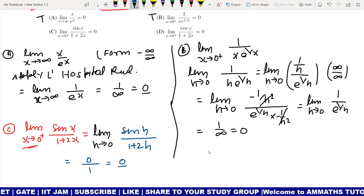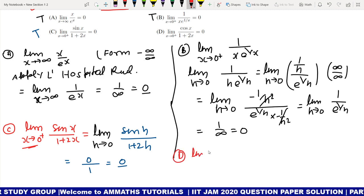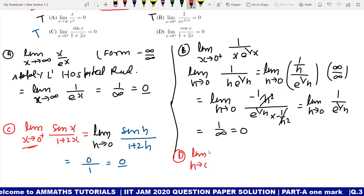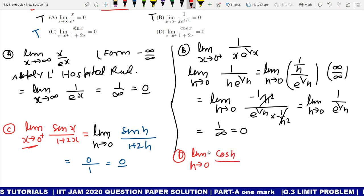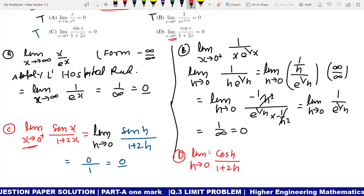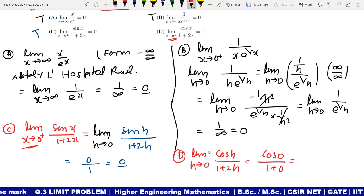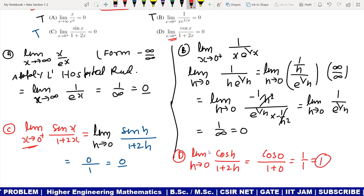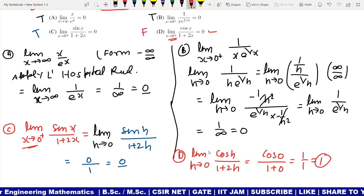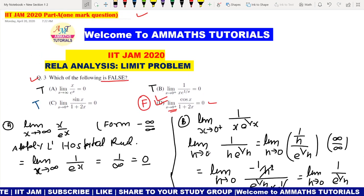But we need false, so now let's talk about D. Limit h tending to 0, cos h upon 1 plus 2h. Here is cos of 0 upon 1 plus 0, 1 by 1, so that is 1. 1 should come but here is 0, so here the option is false. Option D is the correct answer.